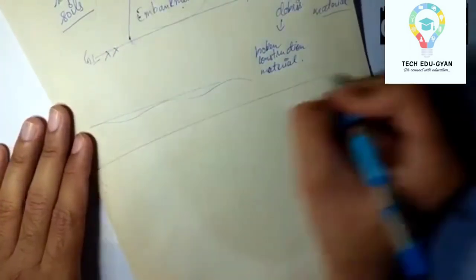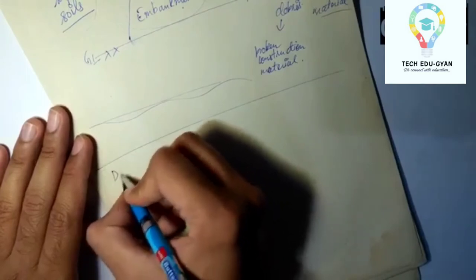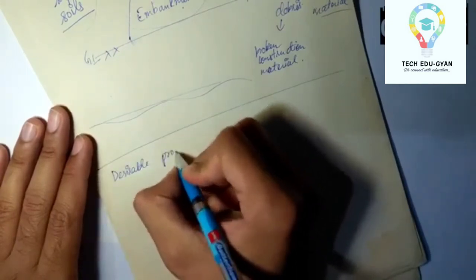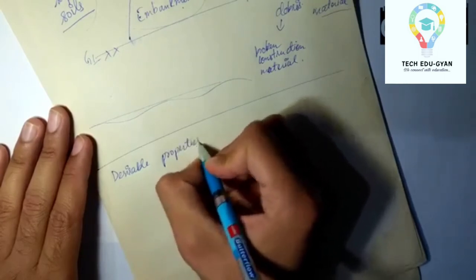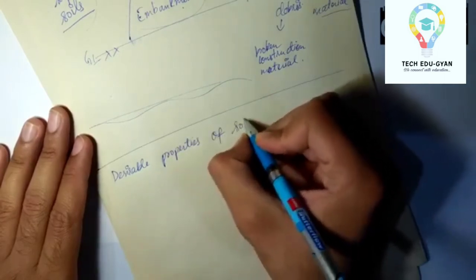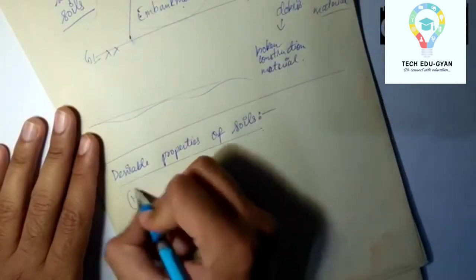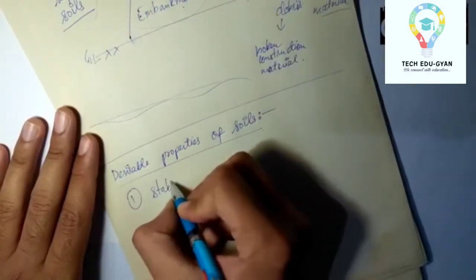Now let's talk about desirable properties. What are the properties that we desire from our soil that we are going to use in our construction? The first one is stability. We are not going to give much focus on these properties, but we need to be clear about them. Our soil should be stable.